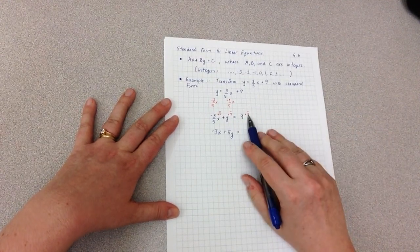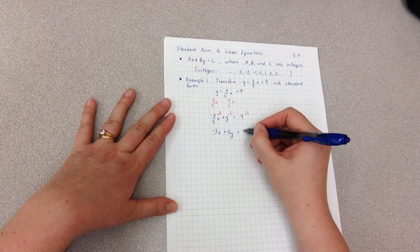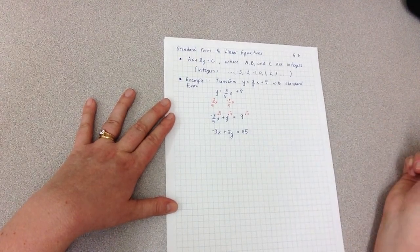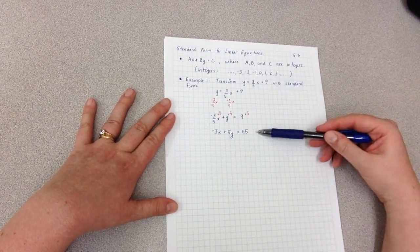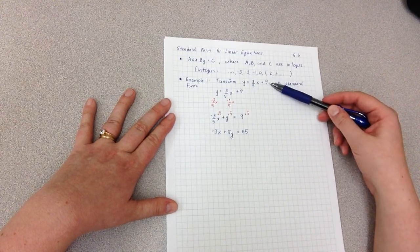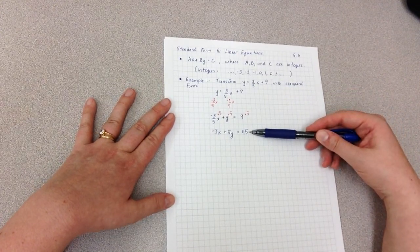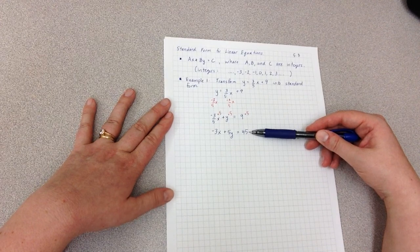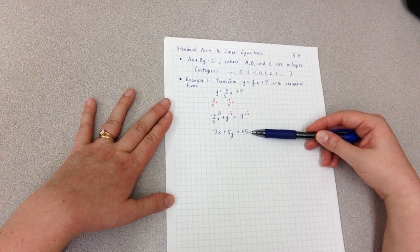So these two equations are equivalent. If I graph this and graph this on the same set of axes, they are the same line. It's just two different ways to write the same information. So now let's look at an example of doing exactly that.